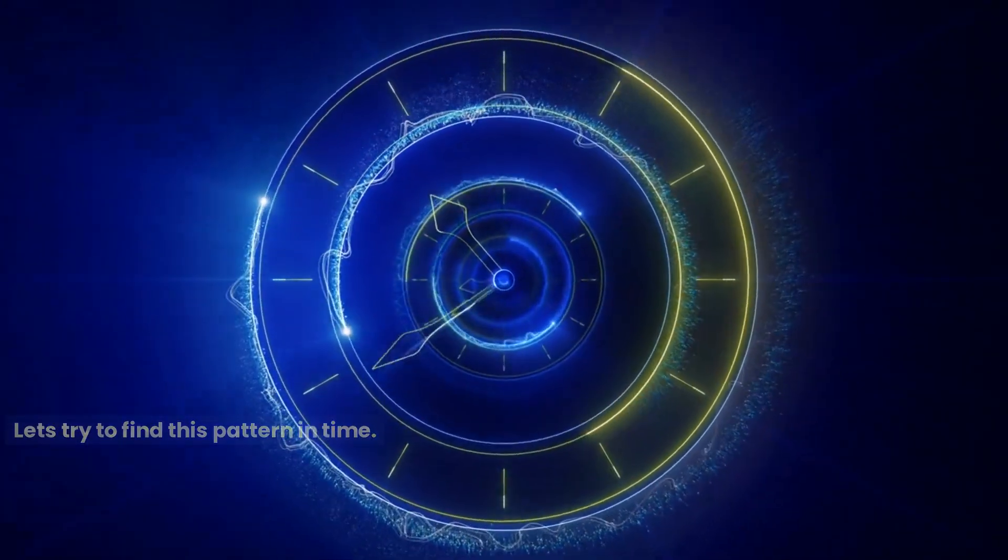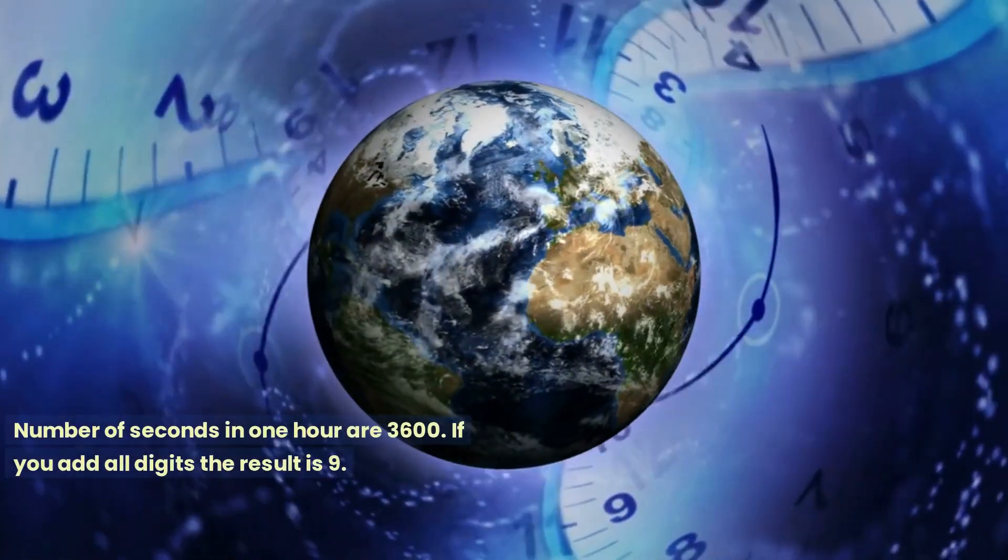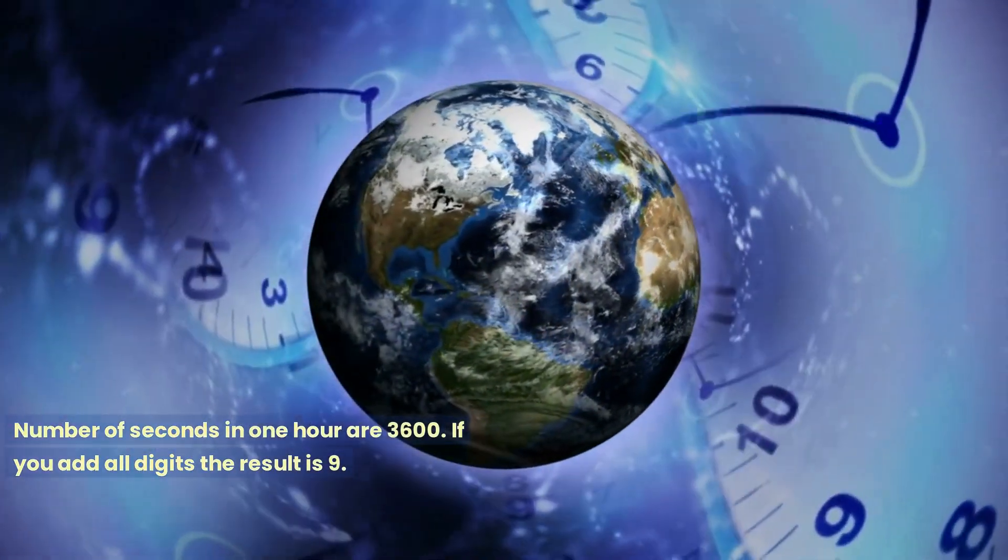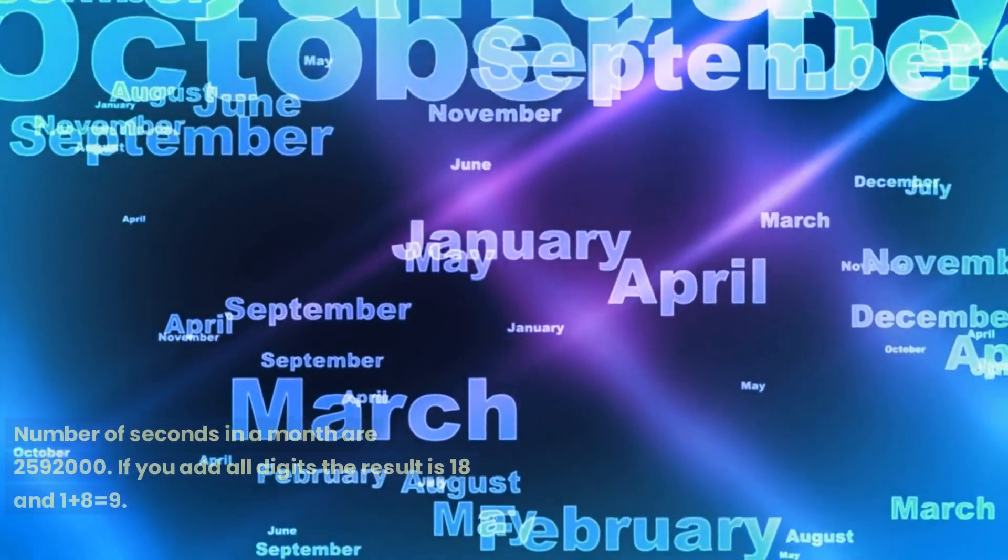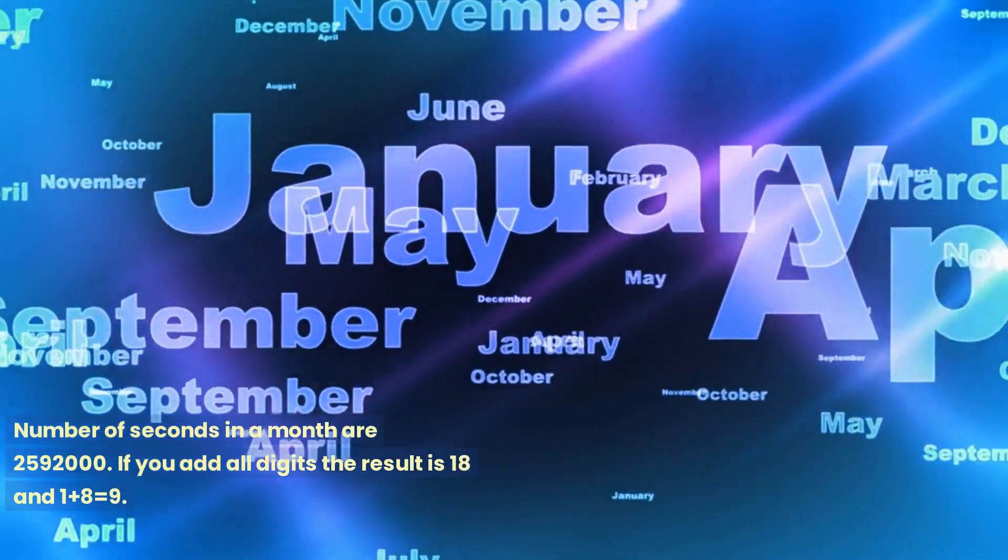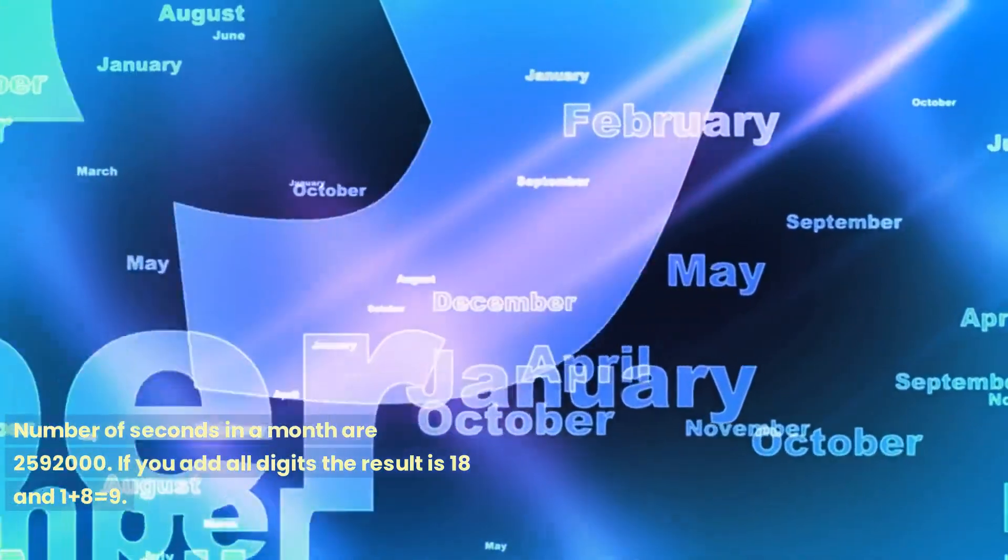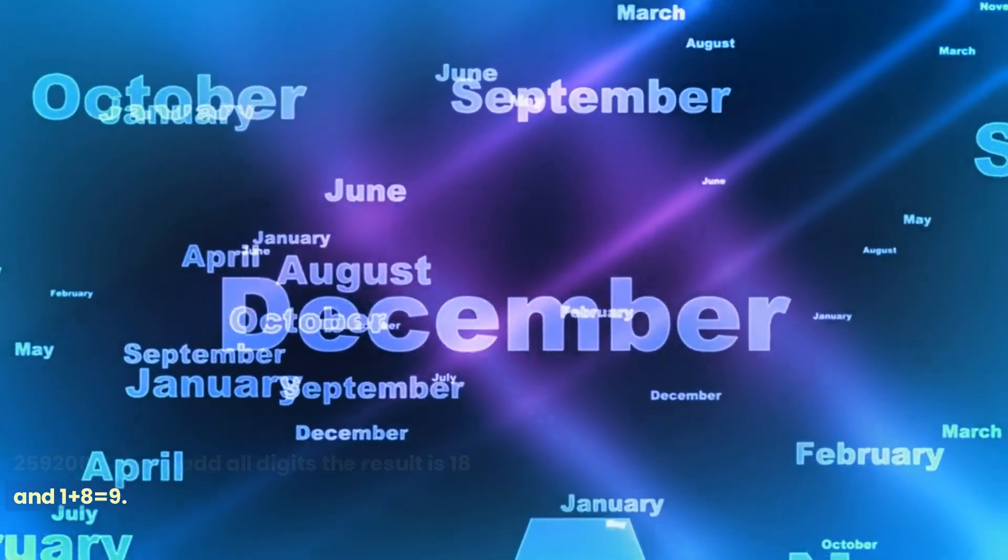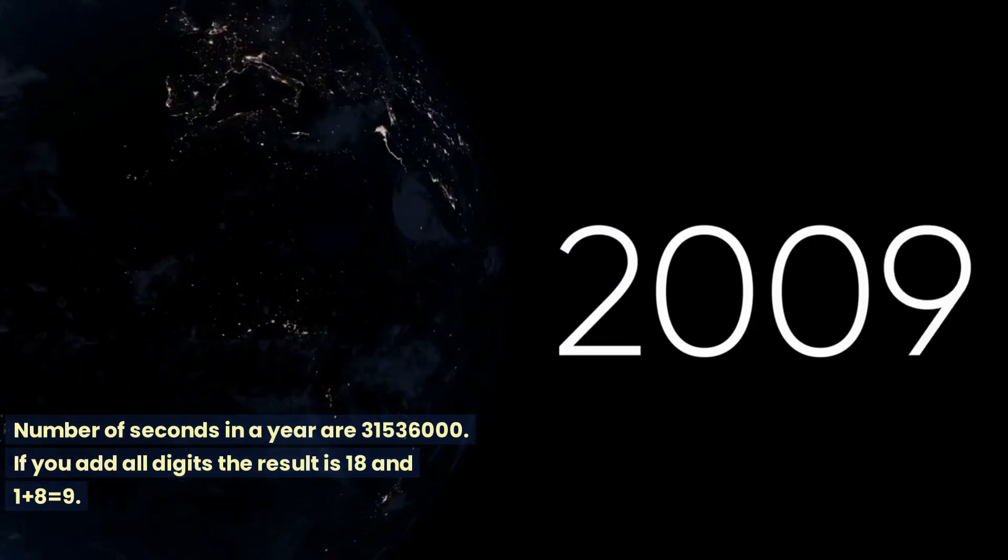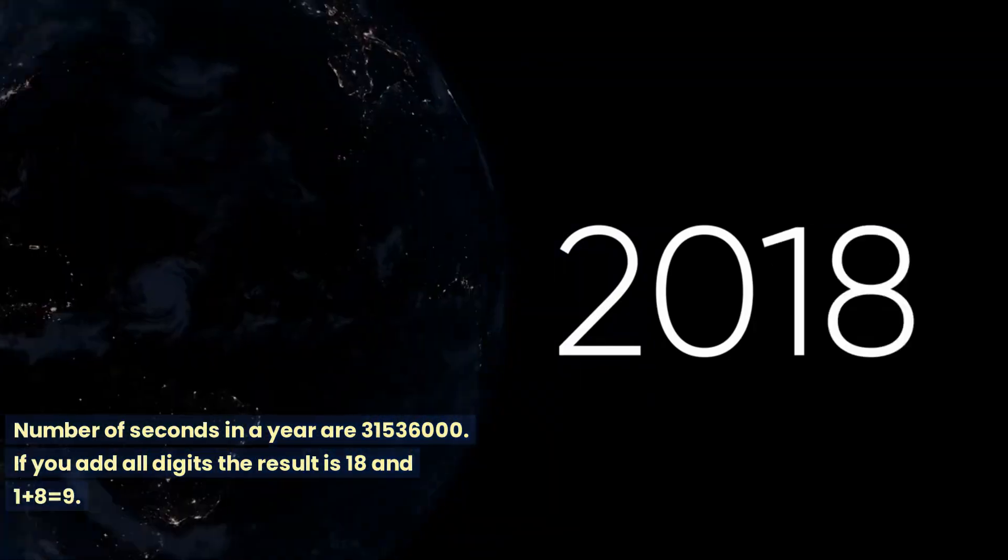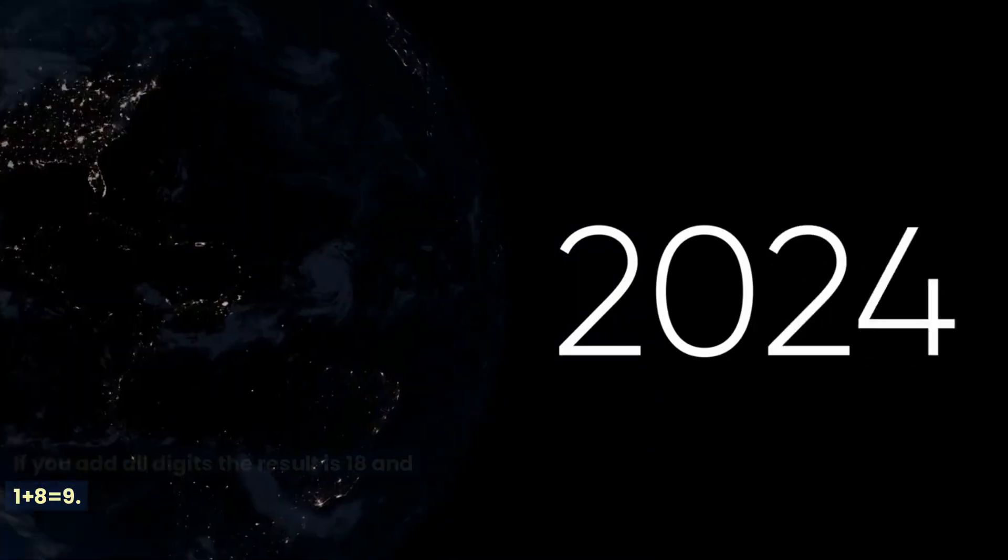Let's try to find this pattern in time. Number of seconds in one hour are 3,600. If you add all digits the result is 9. Number of seconds in a week are 604,800. If you add all digits the result is 18 and 1 plus 8 equals 9. Number of seconds in a month are 2,592,000. If you add all digits the result is 18 and 1 plus 8 equals 9. Number of seconds in a year are 31,536,000. If you add all digits the result is 18 and 1 plus 8 equals 9.